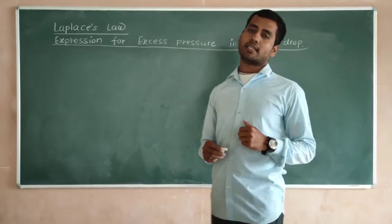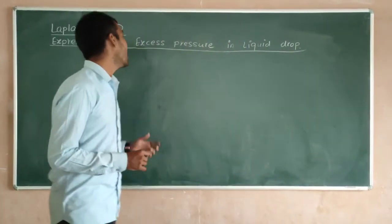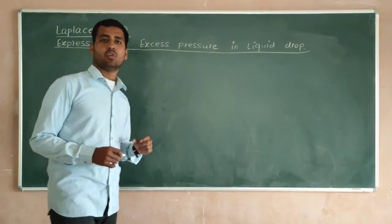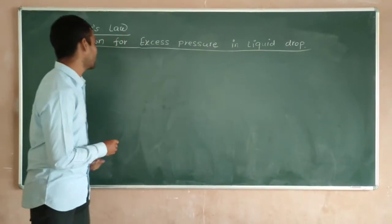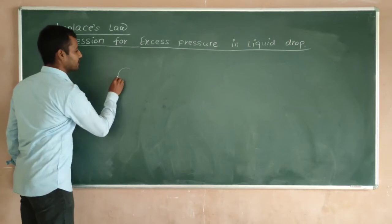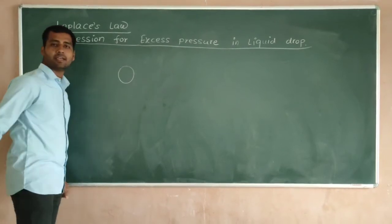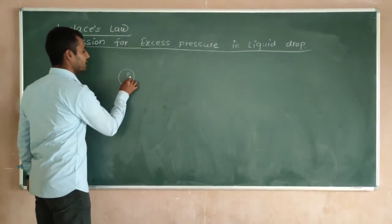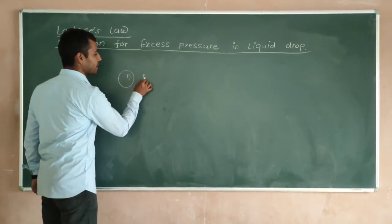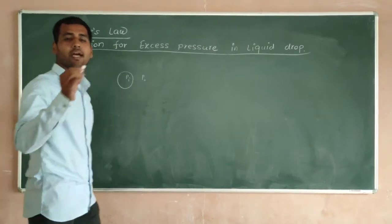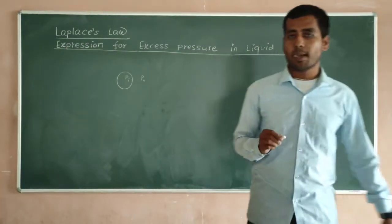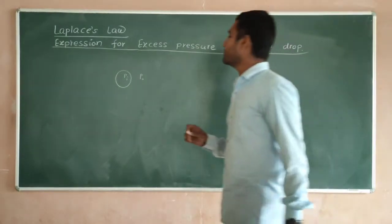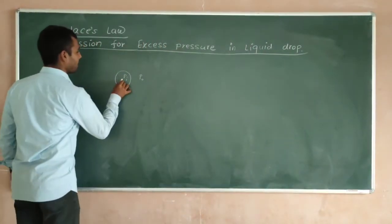The exam question is: find the expression for the excess pressure in a liquid drop. A liquid drop is basically spherical in shape. Here we can see that the liquid drop has an inside pressure P-I and an outside pressure P-O. The radius of this liquid drop is represented by R.